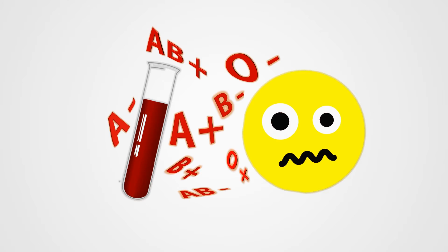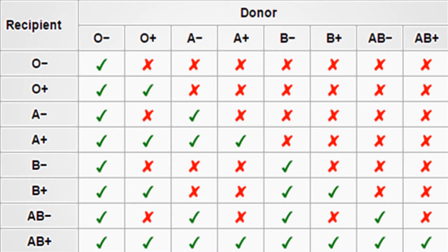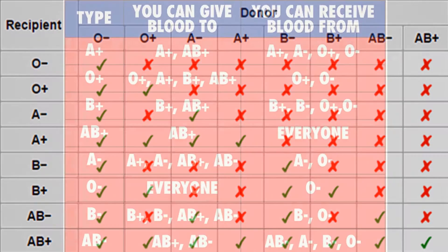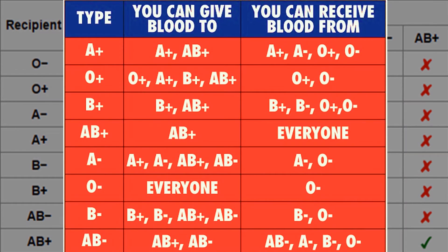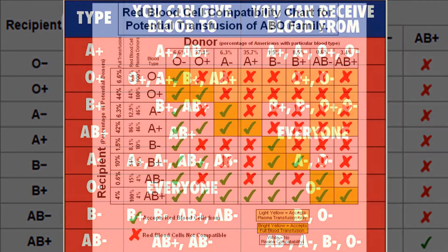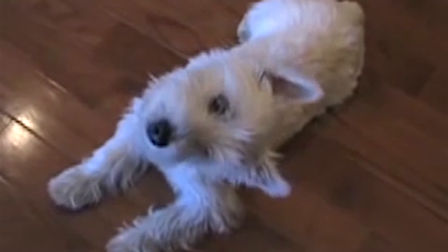Blood types are needlessly confusing. Here's a chart of who can donate blood to people of other types. What? Okay, I'm confused. So I found this one and then this one. Huh?